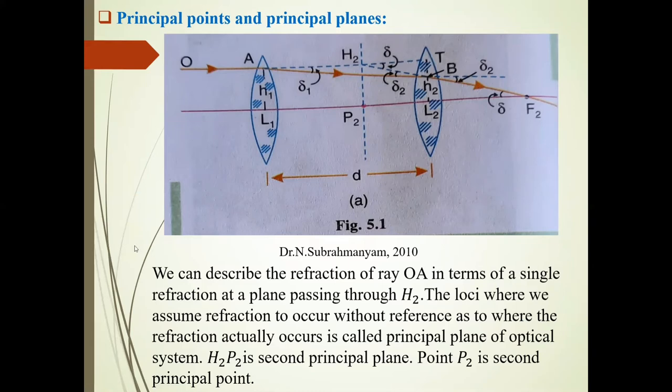See this diagram. In this case, two lenses L1 and L2 are there. Consider this ray OA. After refraction through the first lens, it goes to the second lens, and here again refraction takes place.